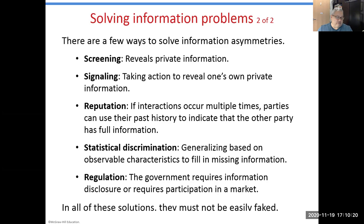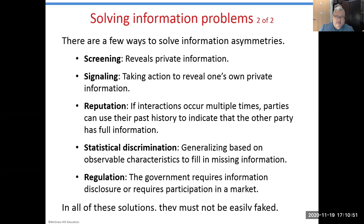Reputation is also an important third-party principal-agent structure. Yelp acts as an agent in establishing the reputation of a restaurant with respect to service quality. However, because Yelp allows anyone to post, the information can be false, and Yelp cannot always correct false information. The same applies to social media platforms that have no liability or requirement to fact-check — they might flag true content as false or fail to screen actual misinformation.